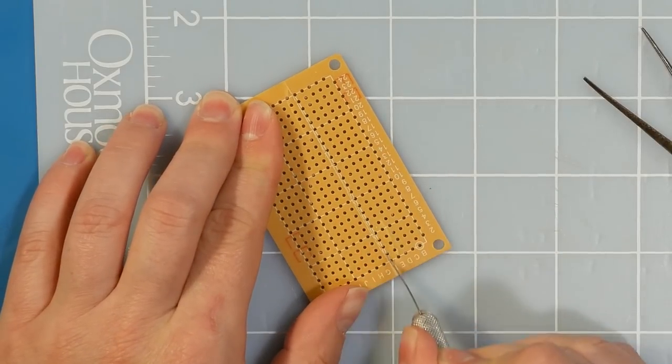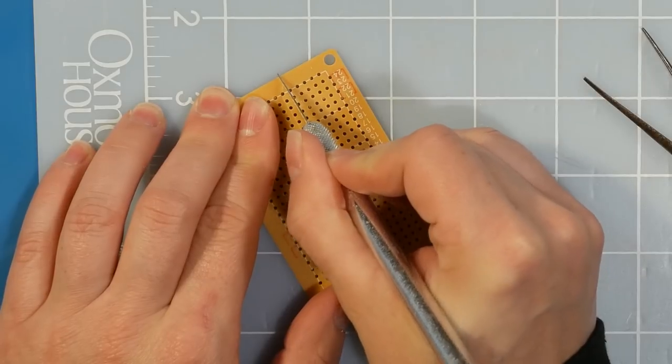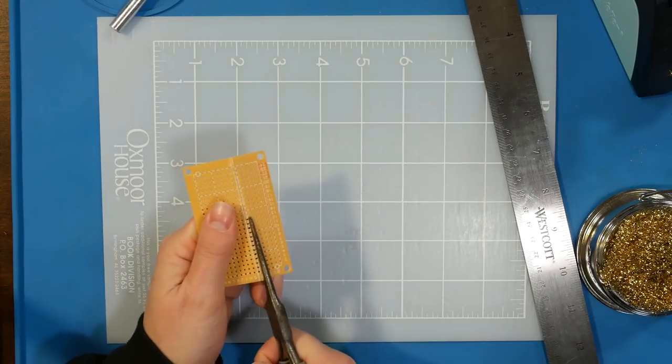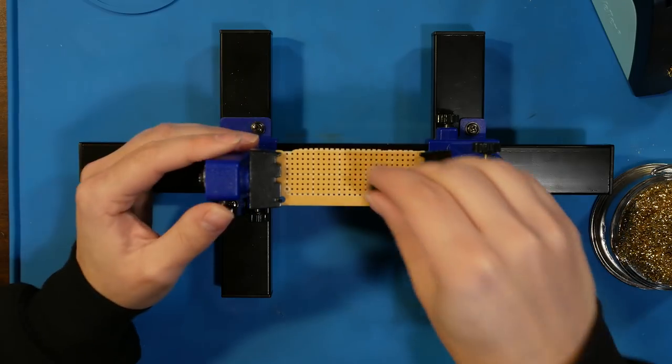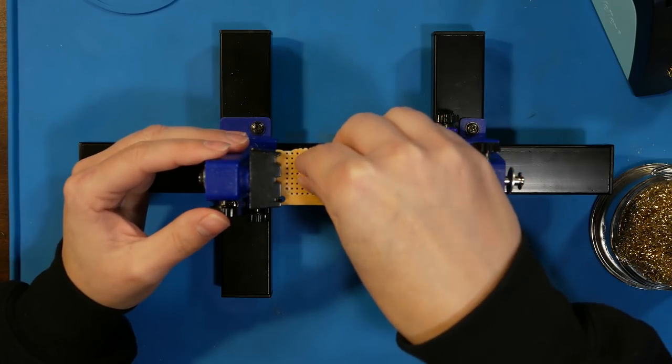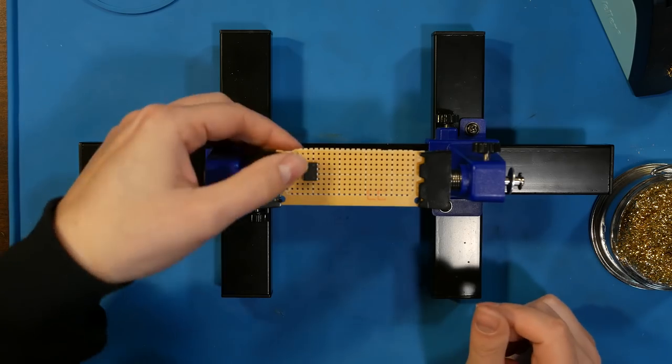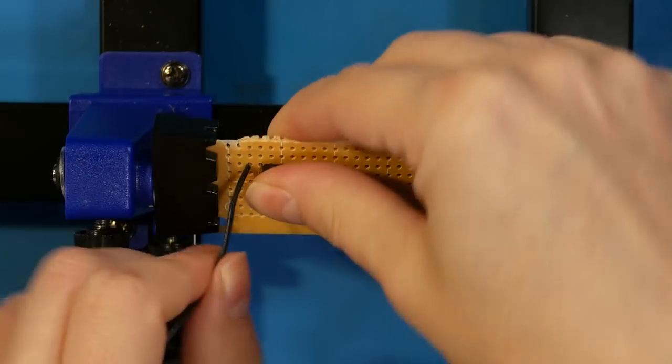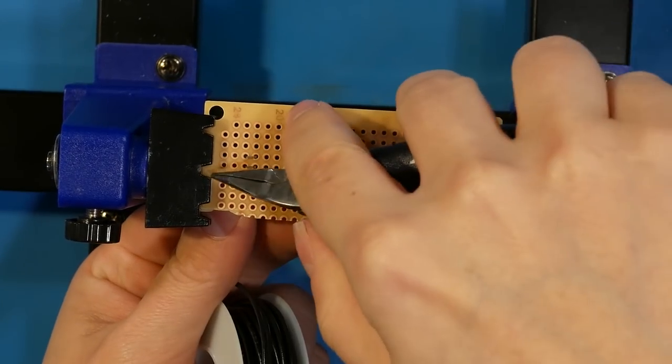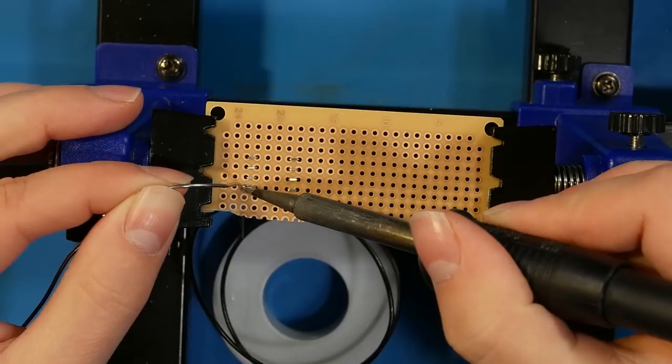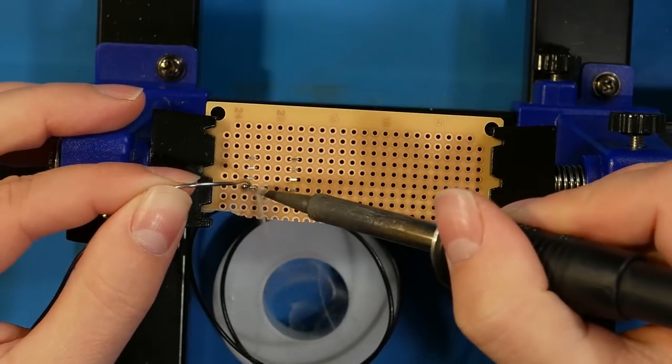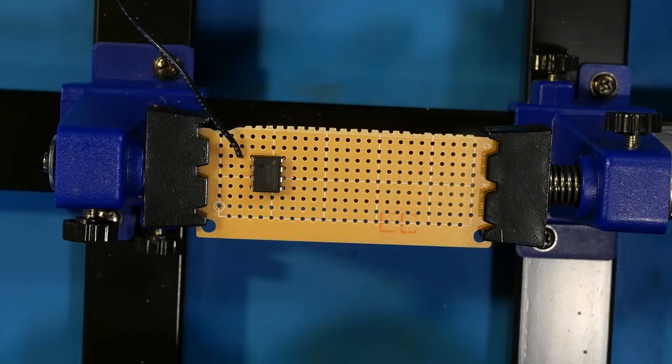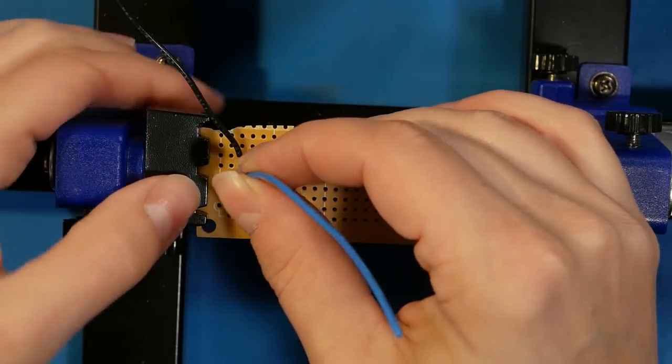The whole circuit can fit on half of one of these lengthwise, so score the perfboard and break it in half. Start with placing the 555. There just needs to be enough room for a resistor and a couple wires to the left of pins one through four. Add a black wire to pin one that will later get soldered to ground. Solder a wire to pin two, connecting it to pin six.